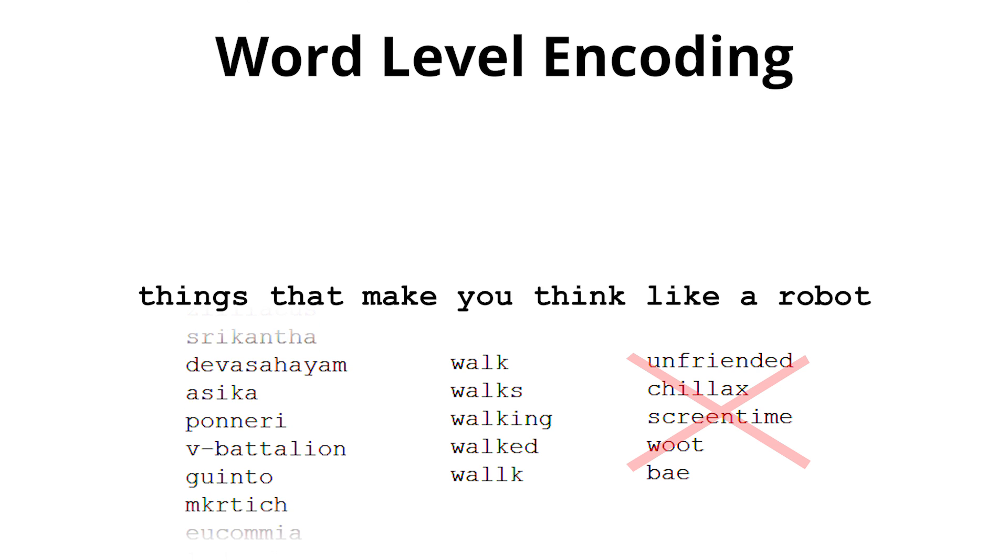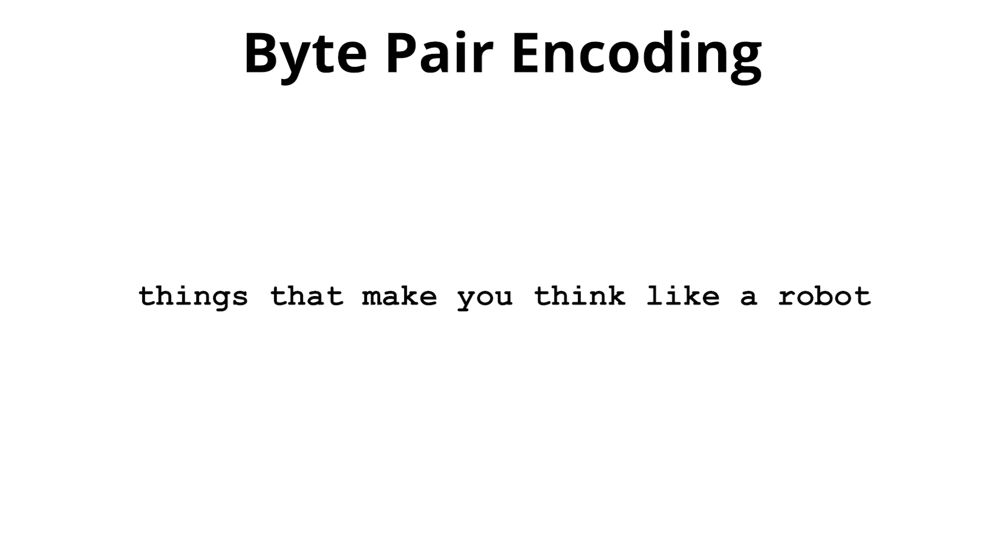So obviously we want something that gets us the best of both, and they achieve this using something called byte-pair encoding. Basically, you start out at the character level, but you run some statistics over your entire dataset to find what pairs of letters are most common together.